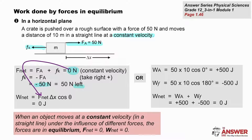We can also calculate the work done by each force separately. The 50 newton applied force in the same direction as the motion gives us a positive amount of work done. The frictional force opposing the motion gives us a negative amount of work done. The sum of works, when we add those two amounts together, gives us a net work of zero joules.